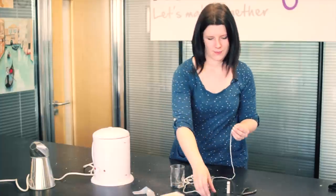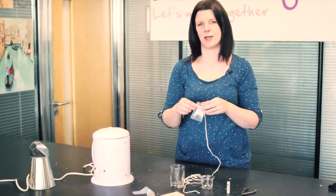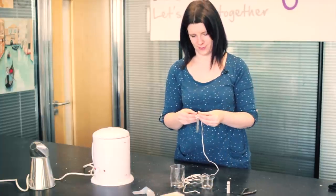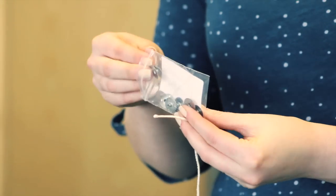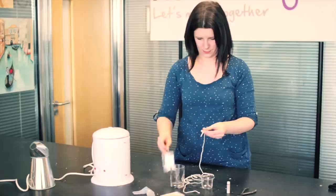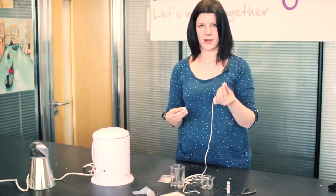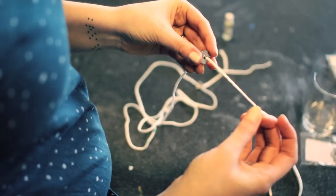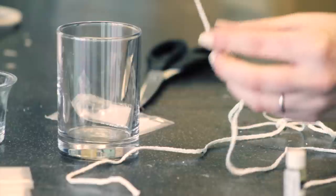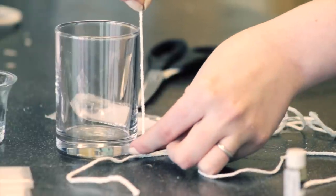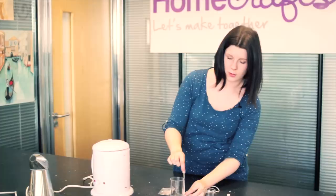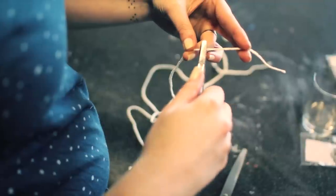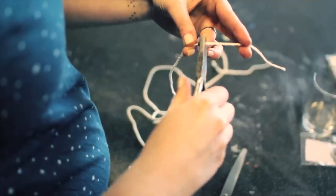First you'll need to take some of your wick and one wick sustainer per container that you're planning to fill. Thread the end of the wick through the wick sustainer until you have wick which is taller than the height of your container. Then take some pliers and crimp the sustainer in place.